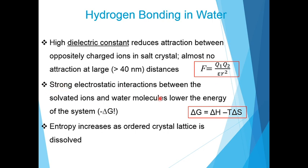which is a dimensionless quantity. Strong electrostatic interactions between the solvated ions and water molecules lower the energy of the system. How does this happen? Entropy increases as ordered crystal lattice is dissolved in water. As entropy increases, the term T delta S becomes more negative and as a result delta G becomes more negative.